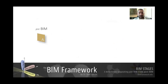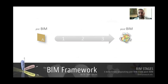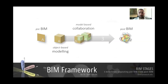From pre-BIM — CAD, sketches, anything before BIM implementation — up to post-BIM or fully integrated BIM, there are three well-defined stages. These are: Stage 1, object-based modeling; Stage 2, model-based collaboration; and Stage 3, network-based integration. Simply put, from pre-BIM to post-BIM you have modeling at Stage 1, collaboration at Stage 2, and integration at Stage 3. Let's cover each of these stages separately.